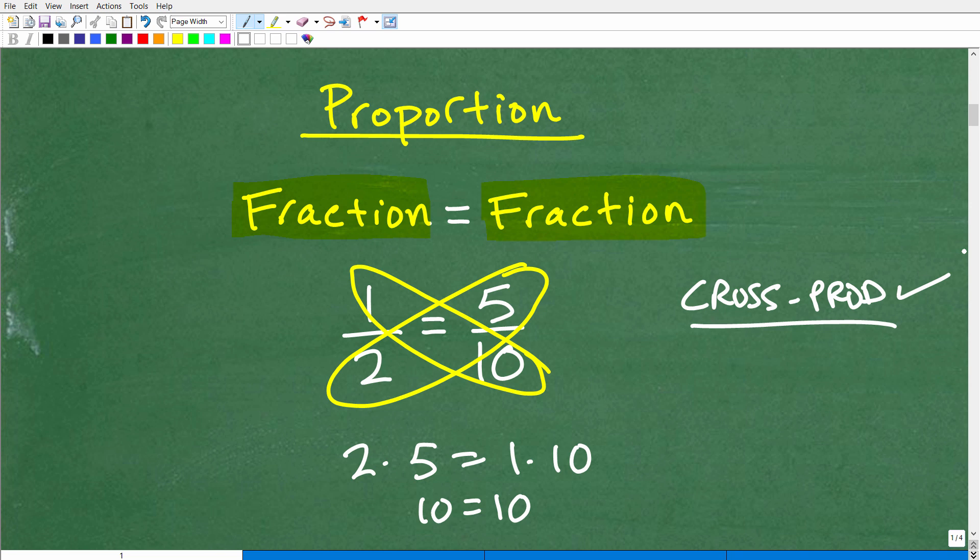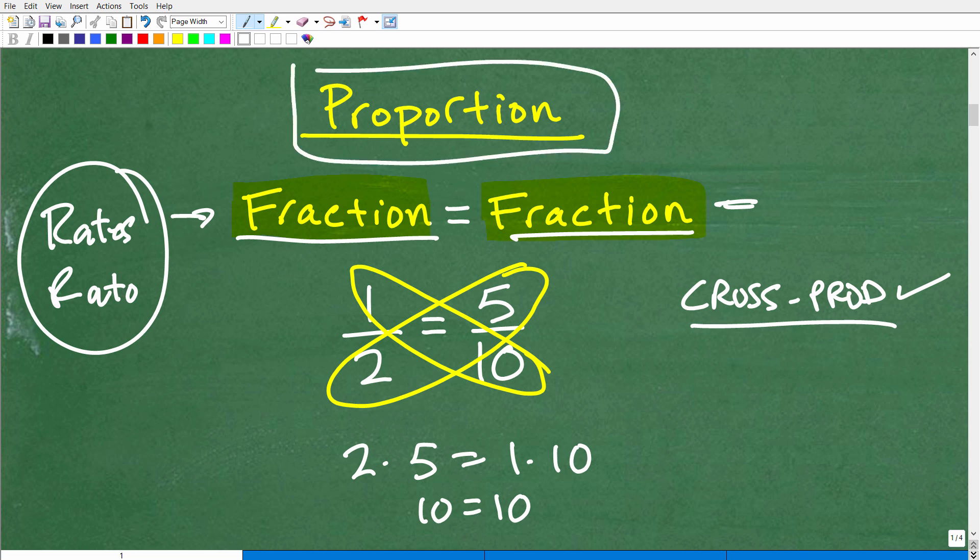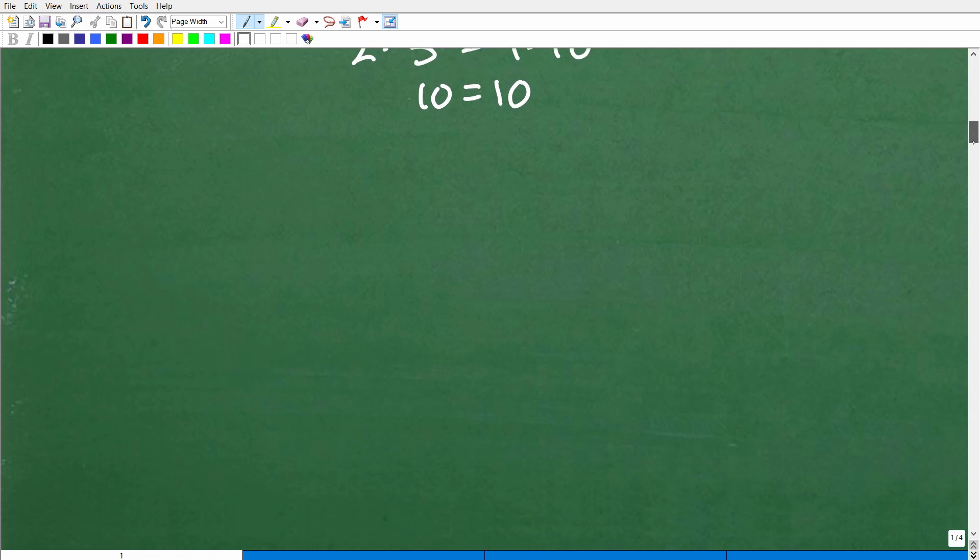This is the main thing we use to solve proportion problems. How do proportions relate to rates and ratios? Well, rates and ratios are fractions. So when dealing with rate or ratio problems, we can set up a proportion to solve these problems. This is how you solve rate and ratio problems - through setting up a proportion. If we can set up two equal fractions or two equal ratios or rates, we can solve using the cross product.